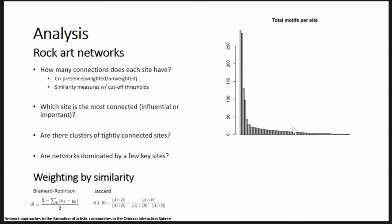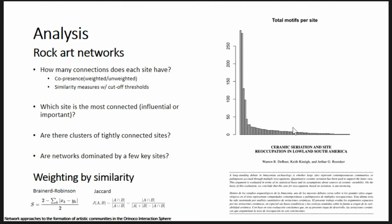I used two measures of similarity: the Brainerd-Robinson index, which has been used fruitfully in the Southwest Social Networks project looking at similarity in ceramic assemblages across the U.S. Southwest over 250 years in 50-year time slices — and interestingly one of the most famous applications of the Brainerd-Robinson index was in Lowland South America, brought to the fore by Warren DeBoer and colleagues to look at similarity between sites over different time periods. And then the Jaccard index, which is a classical similarity measure for categorical count data.